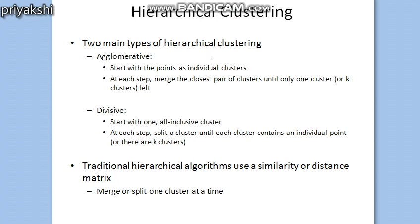In the hierarchical clustering algorithm, if there are five data points then those five data points will be considered as five clusters. At each step we are going to merge two clusters until there is only one cluster remaining. This requires defining a notion of cluster proximity in the case of agglomerative hierarchical clustering.